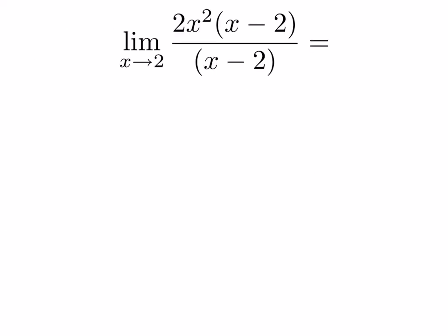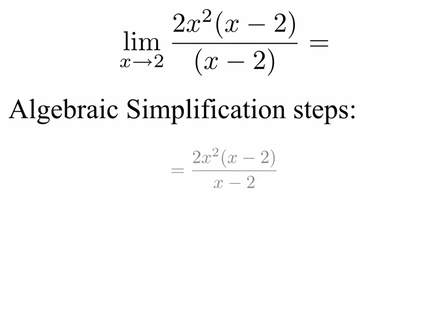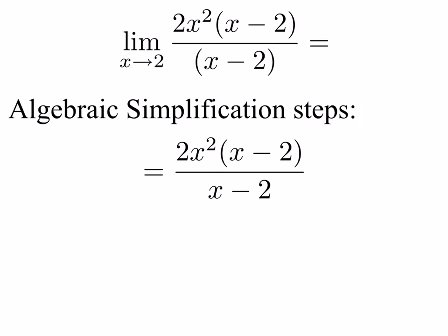Let's look at the next example. I want to take the limit as x approaches 2 of 2x squared times x minus 2 over x minus 2. If you do a quick check, our first rule says we should plug in the limit point. If we do that, you get a 2 minus 2 in the denominator, giving a 0 in the denominator, which is undefined. Our problem is that we have that x minus 2 factor in the denominator, so let's consider an algebraic simplification. I've taken the expression 2x squared times x minus 2 over x minus 2 — I'll deal with the algebra first before considering the limit. Clearly I can cancel the x minus 2 in the numerator and denominator, which takes away the issue of having a 0 in the denominator as that limit point goes to 2.